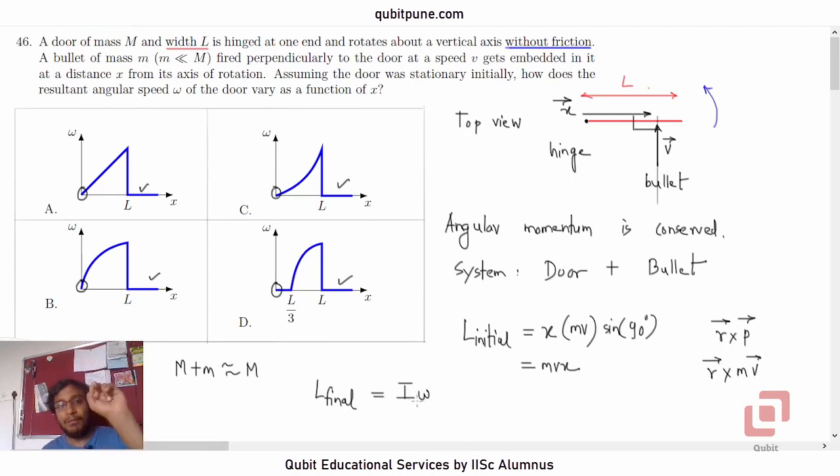Now, you might ask, will the moment of inertia of the system change depending on x? Well, ideally it should change. But here we are ignoring the mass of the bullet. We are saying that it is not contributing as much to the moment of inertia of the system. And because the axis of rotation is not going to change no matter where the bullet hits, I is a constant. This is important.